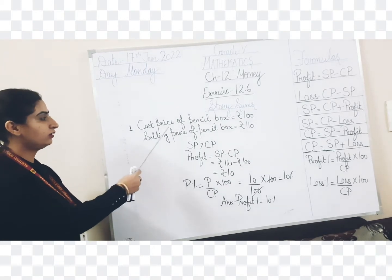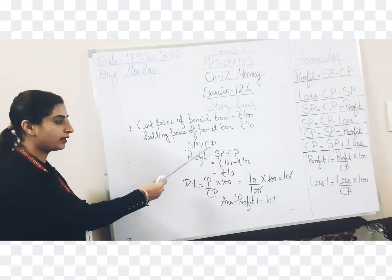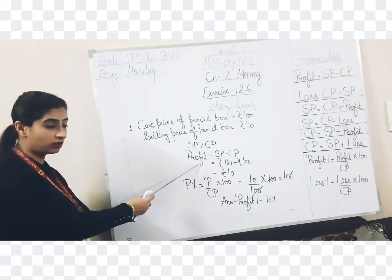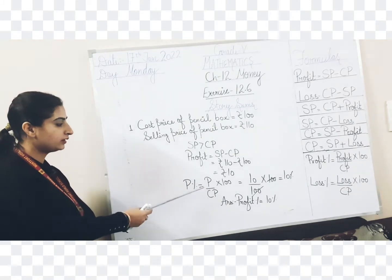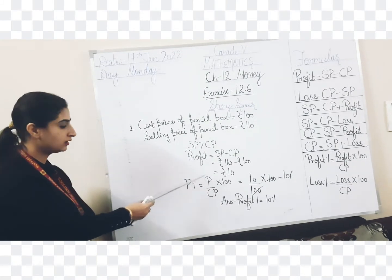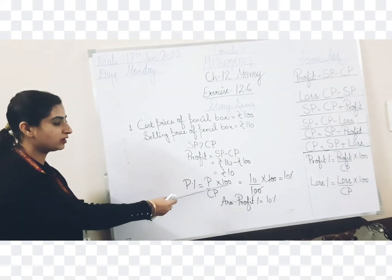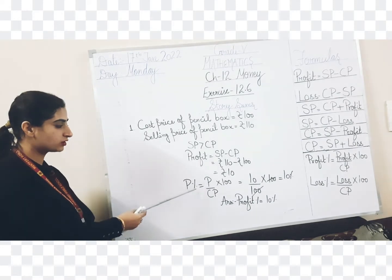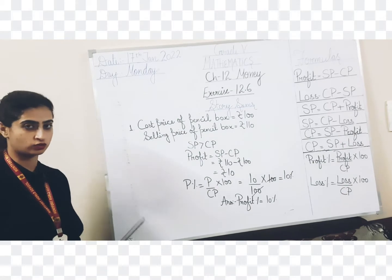One time more I am going to revise. Cost price is given, selling price is given. You need to compare both to calculate profit or loss. It can be loss also if cost price will be more. Then you need to calculate whatever comes - profit or loss - same percentage will be calculated. Profit percent: profit upon CP multiply 100. If loss, loss percent is equal to loss upon CP multiply 100. Let's do the next question.